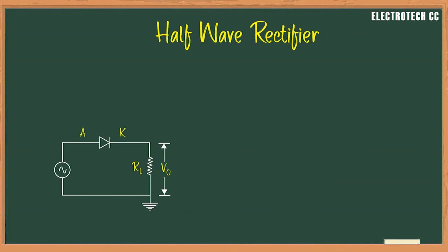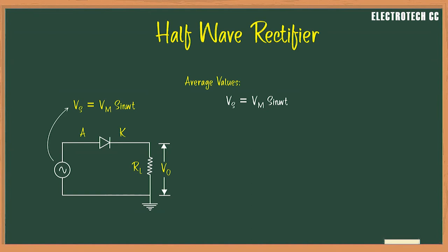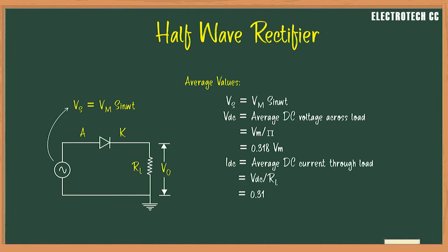Let us discuss some important average value and RMS value parameters for the half wave rectifier. The input signal is a sinusoidal source given as Vs = Vm sin(ωt), where Vm is the maximum value of supply voltage and is equal to √2 × V, and V is the RMS value of supply voltage. The average DC voltage across the load resistor is equal to Vm/π, which equals 0.318 Vm. The average DC current through the load equals Vdc/RL, which simplifies to IDC = 0.45 × Vdc/RL.